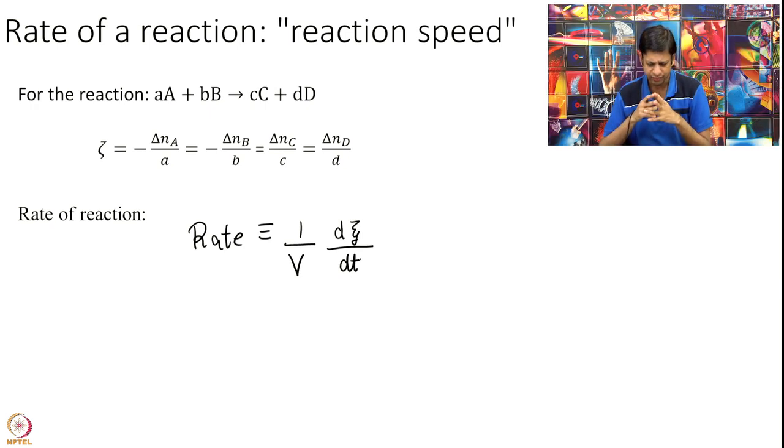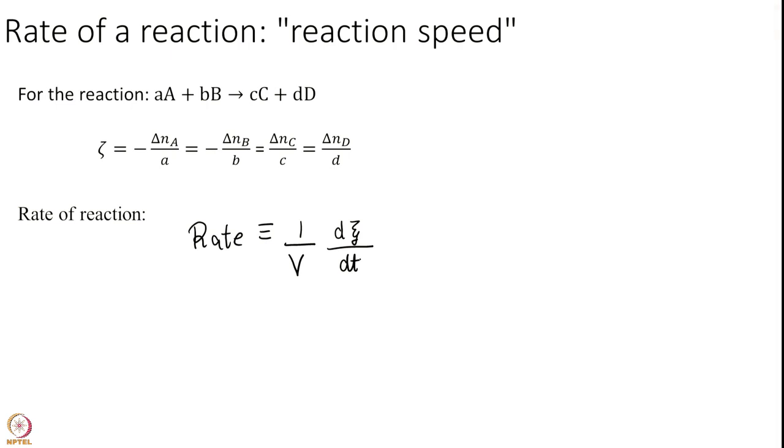Some of you might be curious why we divide by volume, a little bit of extra information. It is just so that the rate becomes an intensive variable. We do not want it to depend on the overall volume. Nonetheless, let us just put it in this equation here.